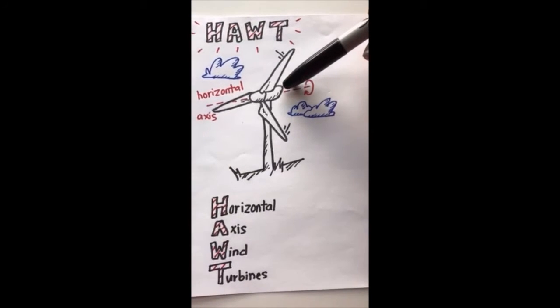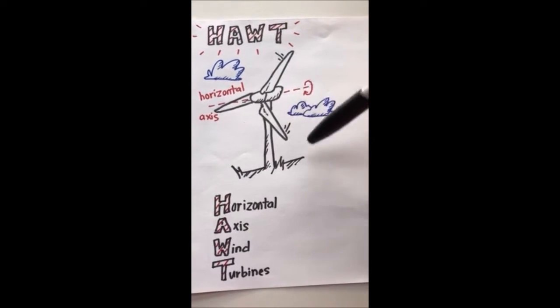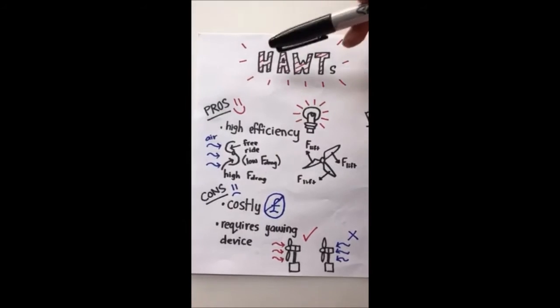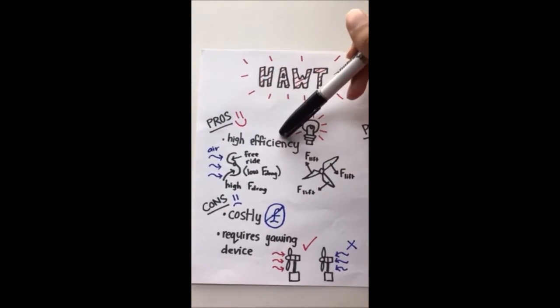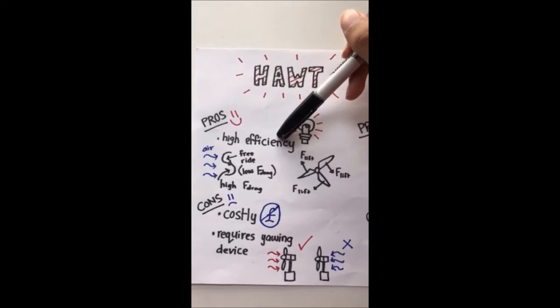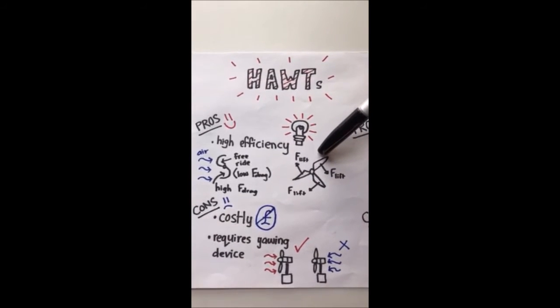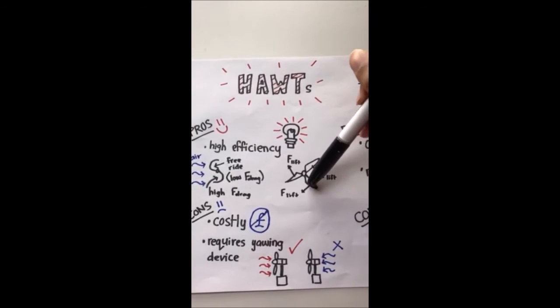HOTs rotate about an axis that is parallel to the ground and primarily operate on lift force. One of the main advantages of HOTs are their higher efficiency than VOTs. They're up to about 20% more efficient. This happens because each blade has its own lift force for rotation.